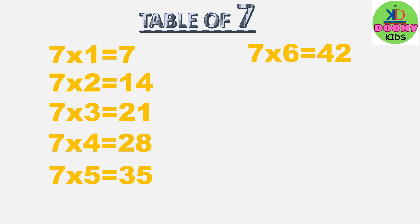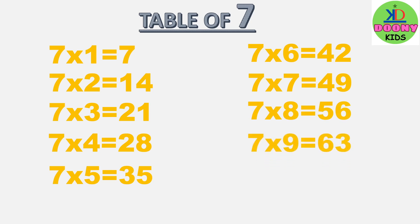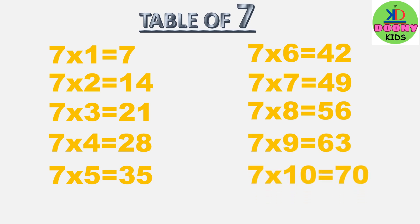7 sixes are 42, 7 sevens are 49, 7 eights are 56, 7 nines are 63, 7 tens are 70.